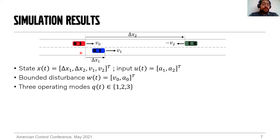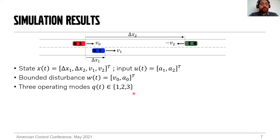The scenario contains three operating modes, so the discrete state Q takes values in the set {1, 2, 3}. We specify the goal sets and input and state constraints for each of these modes to describe the test scenario. The goal sets represent certain values for the inter-vehicle gaps and the longitudinal speeds of the test targets.